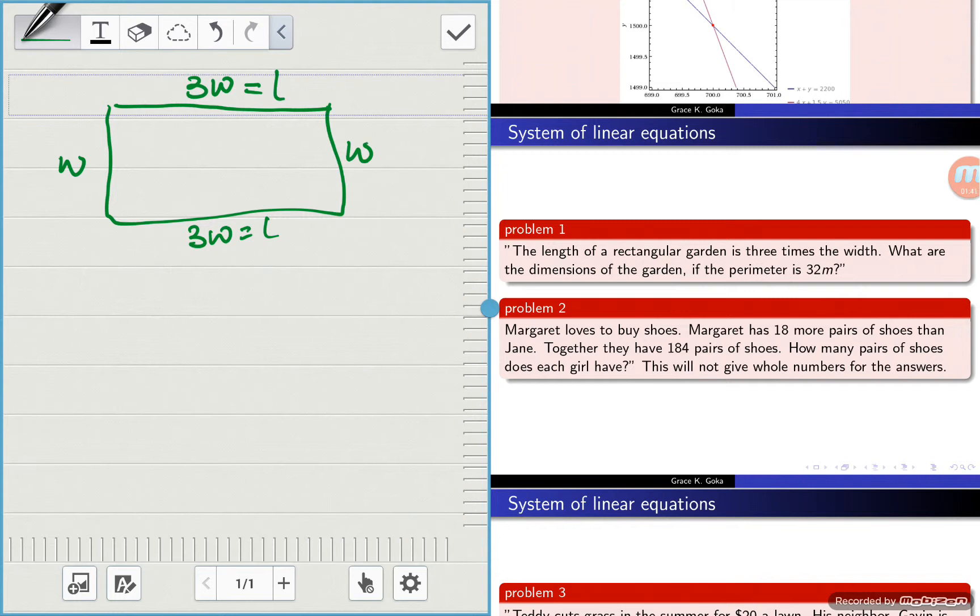Now what do we know about the perimeter? Perimeter is the total distance around the object.